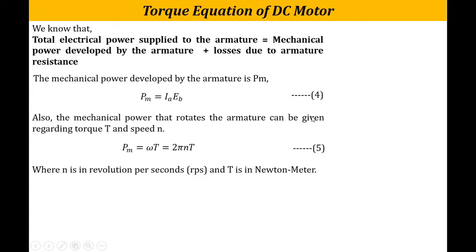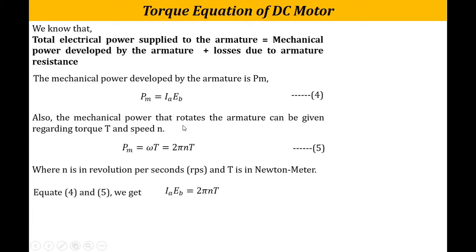If we equate these two equations — equation 4 and equation 5 — both have Pm on the left-hand side. Note that n in equation 5 is in revolutions per second (rps) and T is torque in newton-meters. Equating gives: Ia × Eb = 2πn × T. From this expression we can write the formula for torque: T = (Eb × Ia) / (2πn).